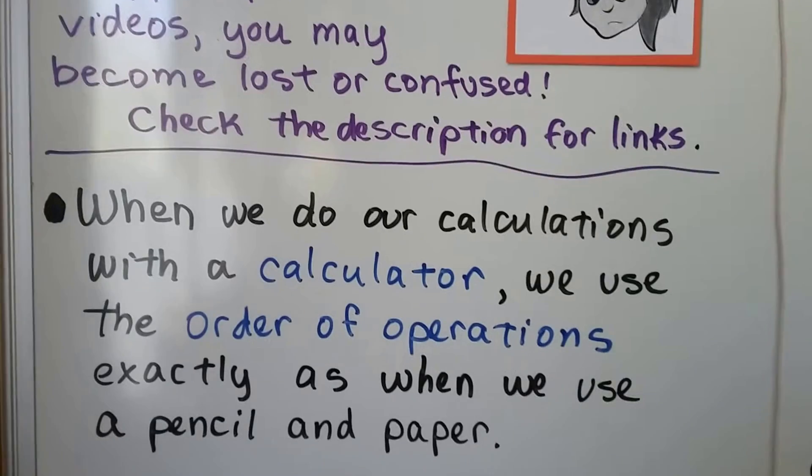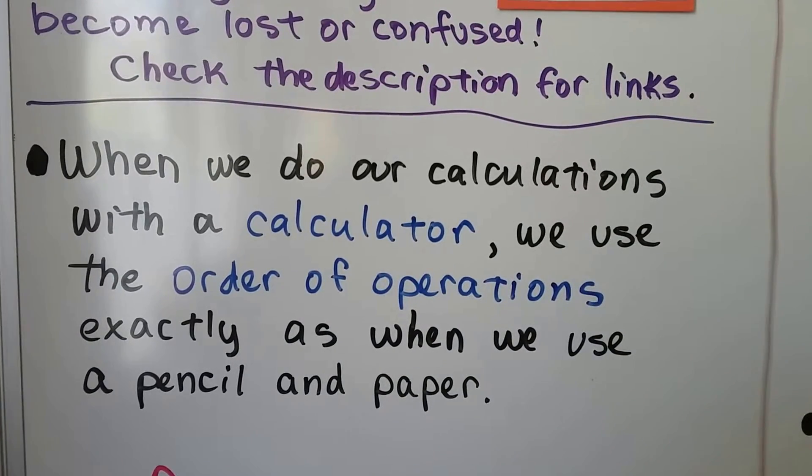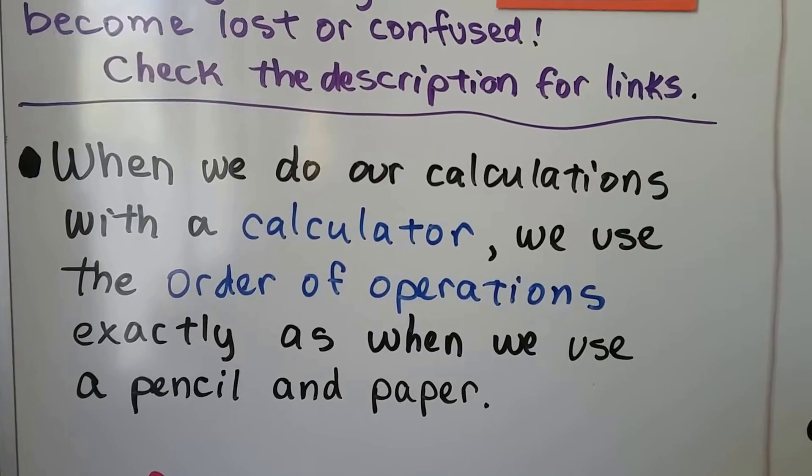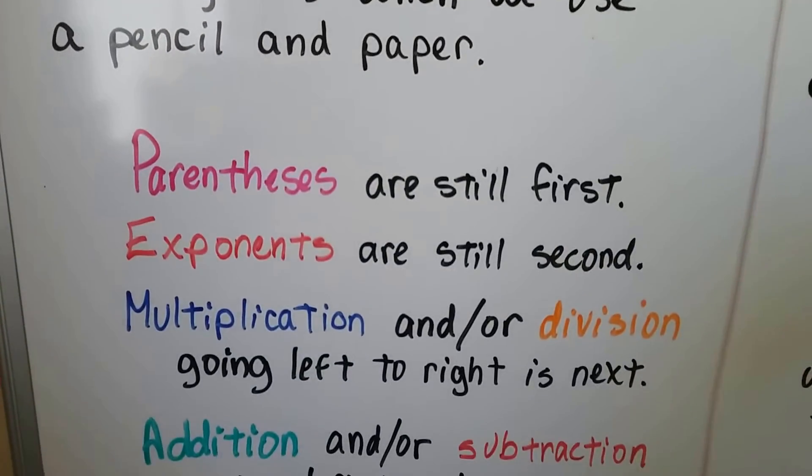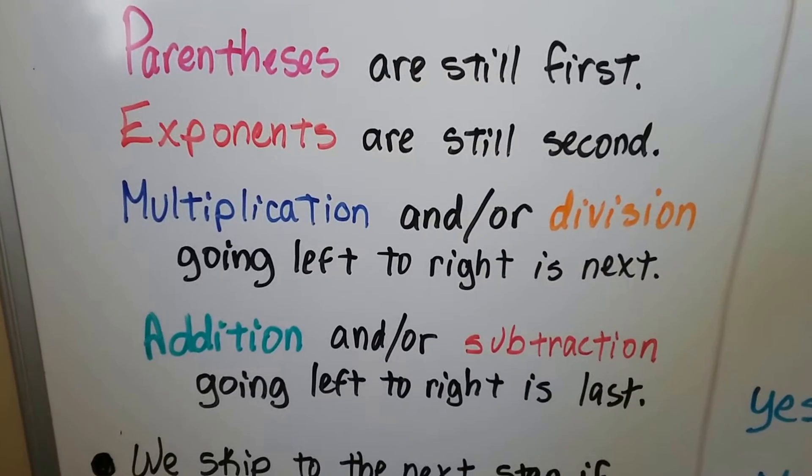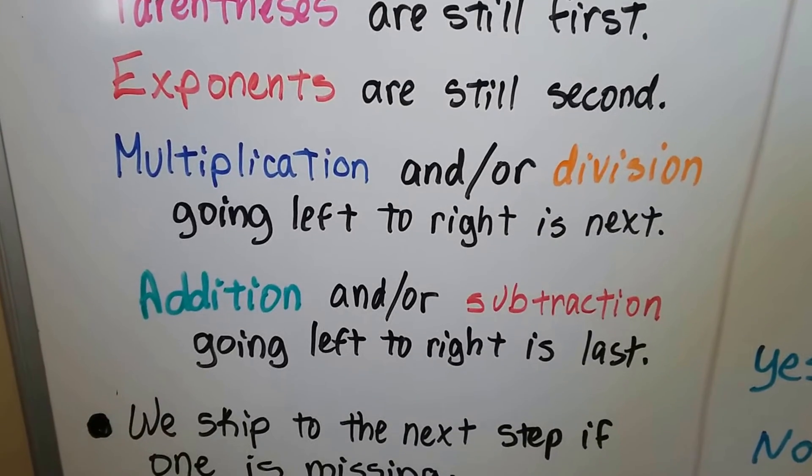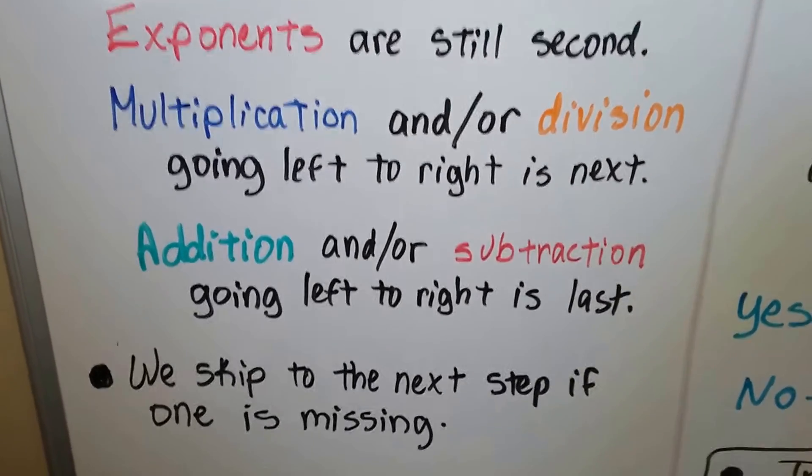When we do our calculations with a calculator, we use the same method. We use the order of operations exactly as when we used pencil and paper. The parentheses are still first. Exponents are still second. Multiplication and/or division going left to right is next. Then addition and/or subtraction going left to right is last. And we skip to the next step if one is missing.